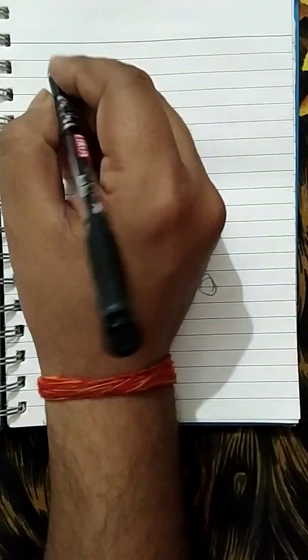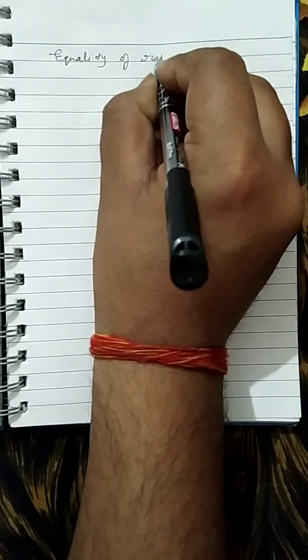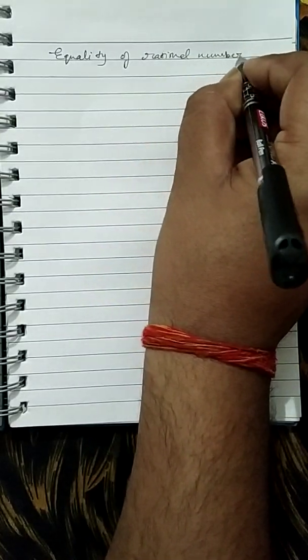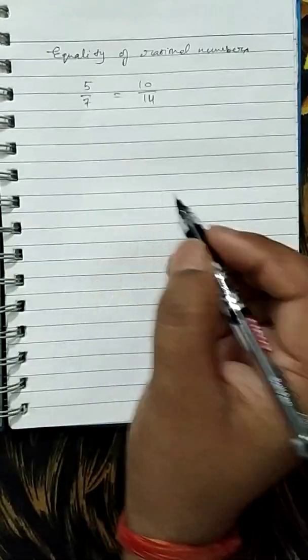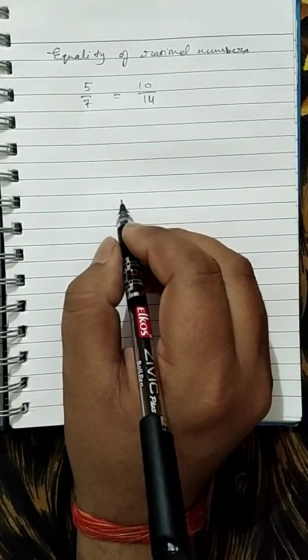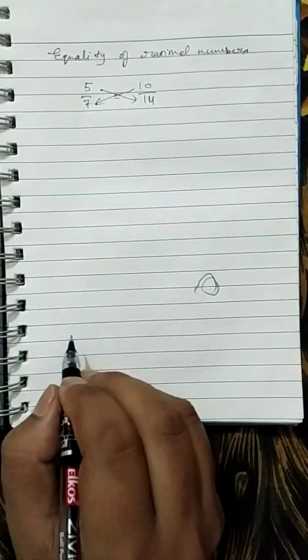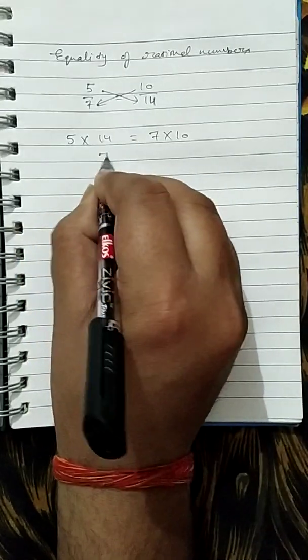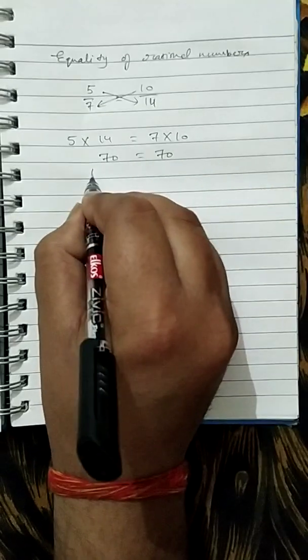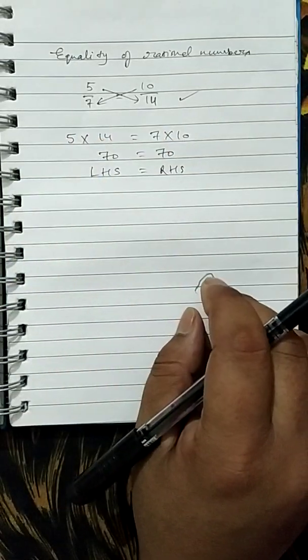There is equality of rational numbers. If we take the example 5 upon 7 equals to 10 upon 14, and if we have to verify whether these rational numbers are equal or not, we can use the cross multiplication method. 5 into 14 equals to 7 into 10. So 14 times 5 is 70, and 10 times 7 is also 70. LHS is equal to RHS. So these two rational numbers are equal.